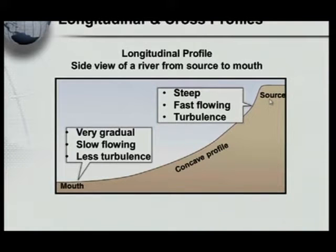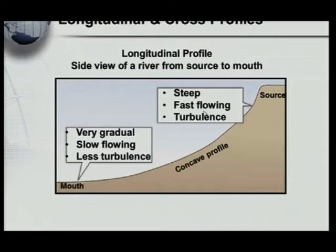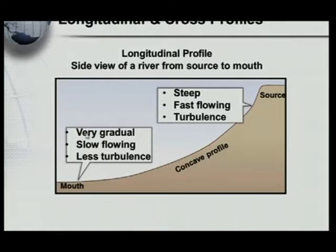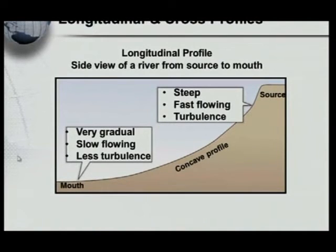There's the source and there's the mouth. A Longitudinal Profile runs from the source to the mouth. Because it's very steep at the top, you're going to have your fast-flowing, turbulent flow — as we discussed previously with laminar flow. Towards the middle it's less turbulent, and at the lower end you have more of your laminar type of flow, because it's very gradual and slow-moving. Please remember your longitudinal and cross profiles.